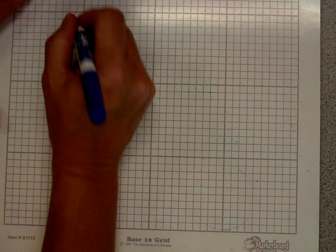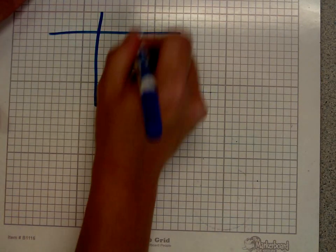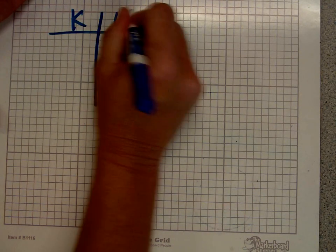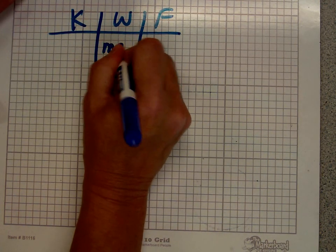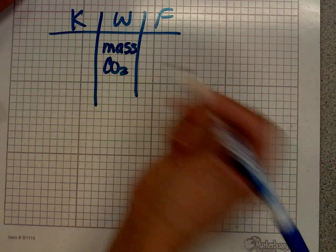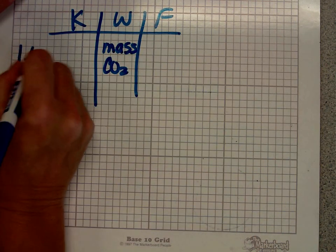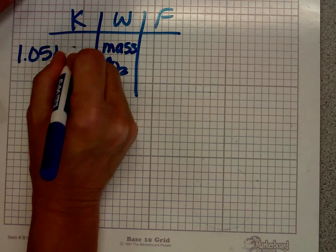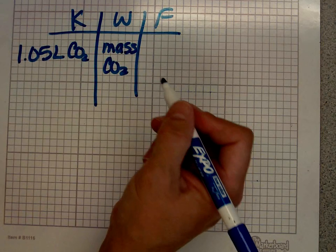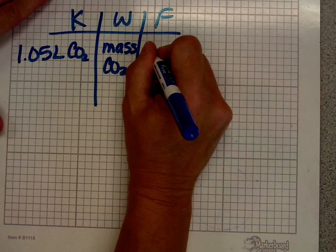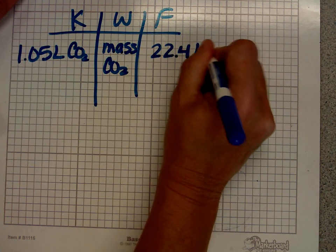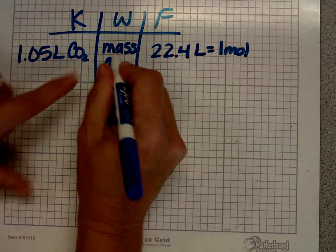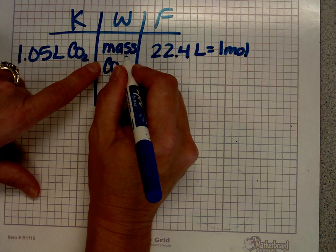In this case, I'm just going to write my Know-Want-Formula grid. This asks what mass of carbon dioxide occupies a volume of 1.05 liters at STP. Because I have liters, I know 22.4 liters equals 1 mole. But because I have mass, anytime you have mass or grams, you need to go to the periodic table.